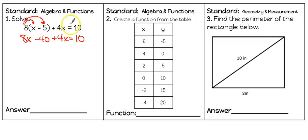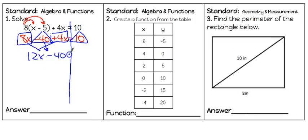First step, I'm going to draw a line here and identify our terms. Combine the like terms. We've got 12x. Bring down negative 40 equals 10.